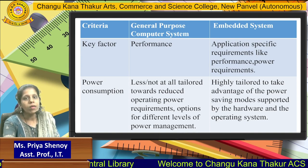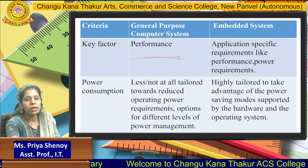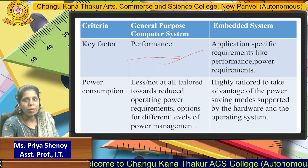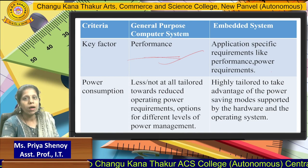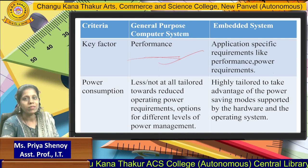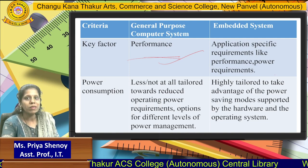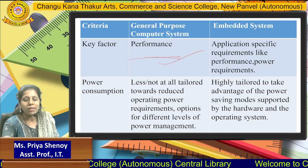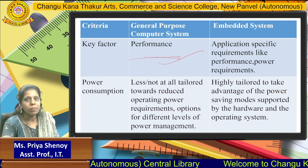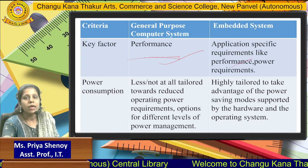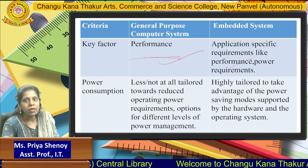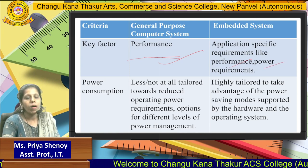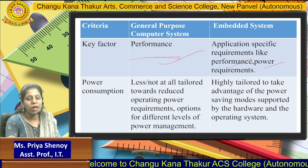Performance will be the key factor in a general purpose computer system, whereas in an embedded system, apart from performance, there will be application-specific requirements. In some cases, performance may be the main key factor, while in other cases, power requirements may be the basic key factor.